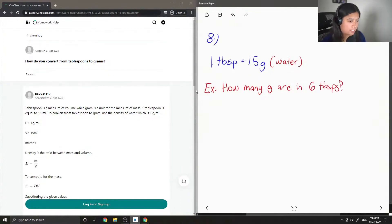If we wanted to answer this question using the 15 grams per one tablespoon conversion factor, we'll do x grams over 6 tablespoons equals that conversion factor in the same order. So 15 grams over 1 tablespoon.